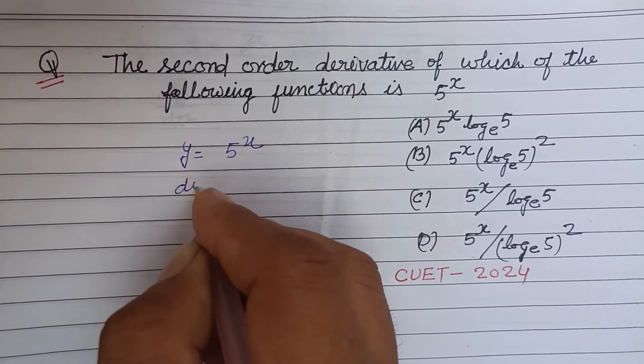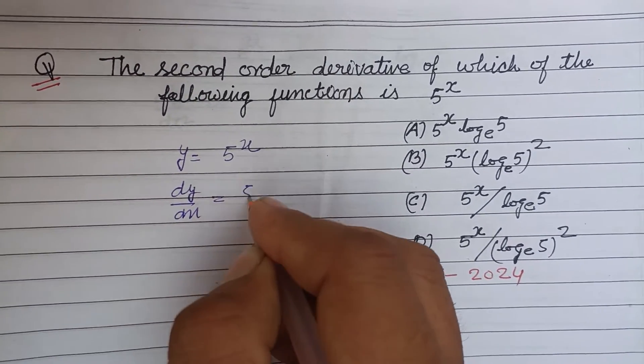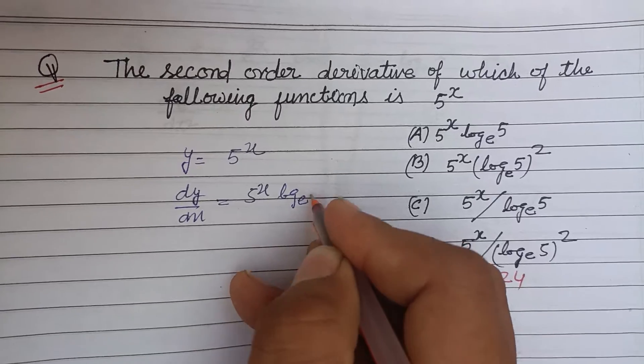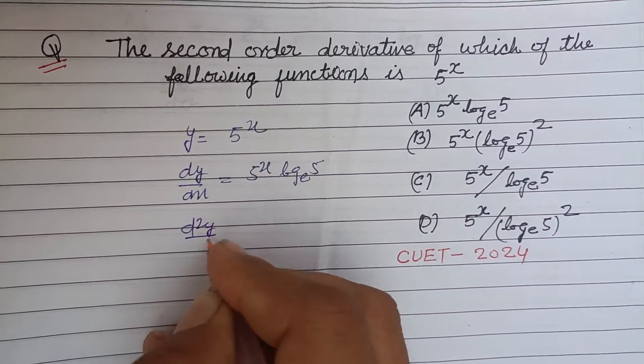Differentiating: dy/dx = 5^x log_e(5). Now again differentiating d²y/dx²...